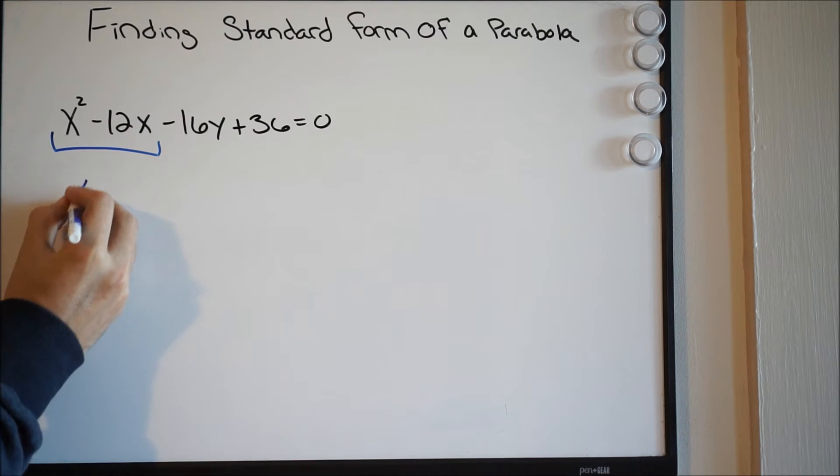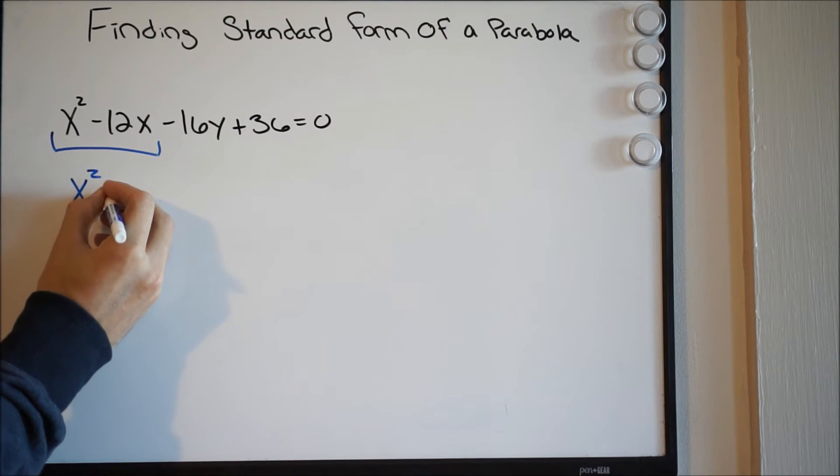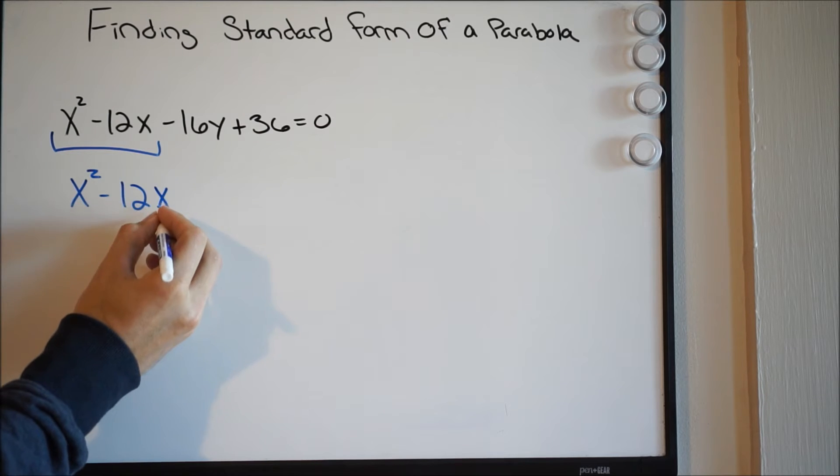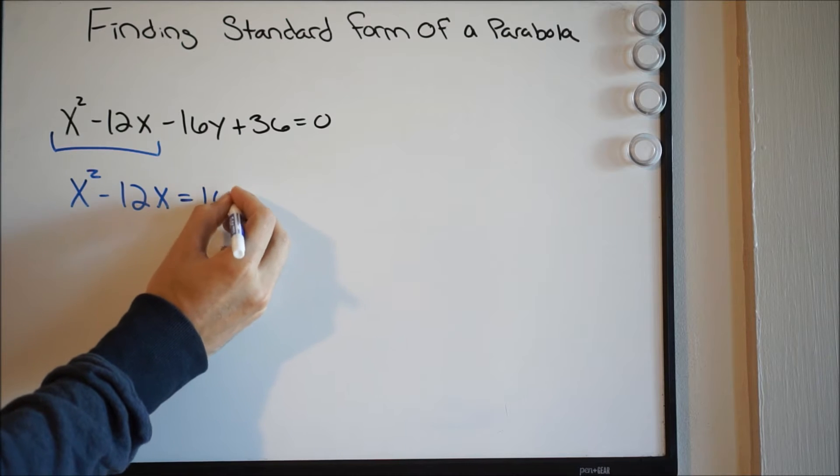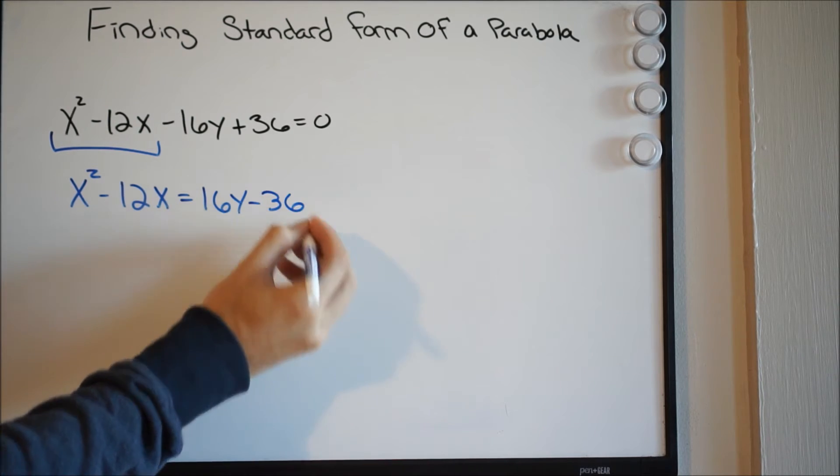So in this case we're going to have x squared minus 12x, and we're moving everything else over to the right. So we're going to have 16y minus 36.